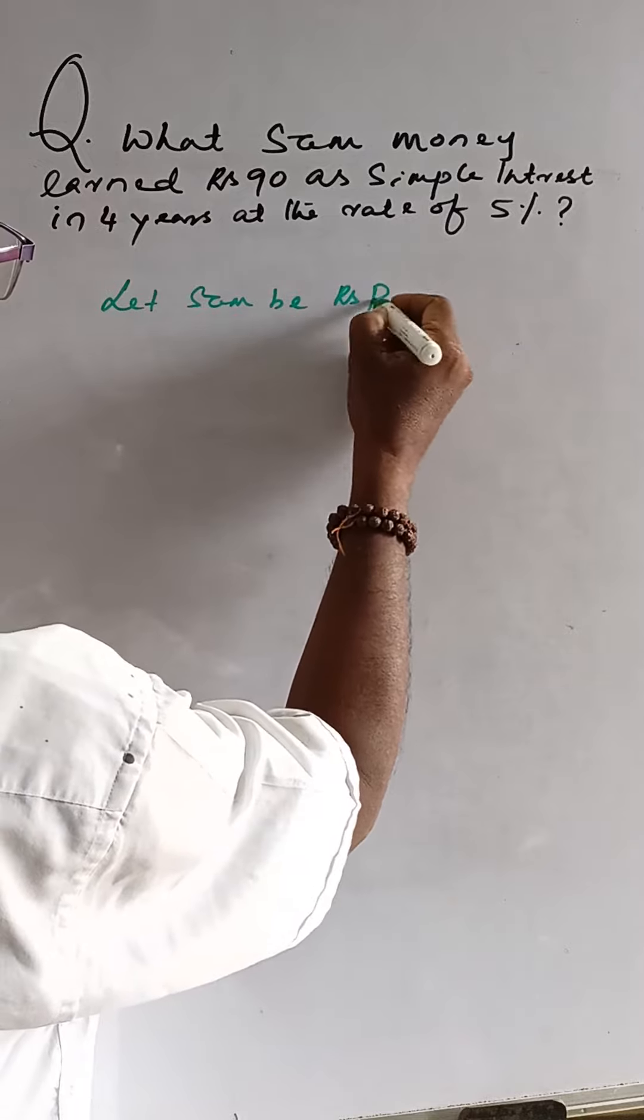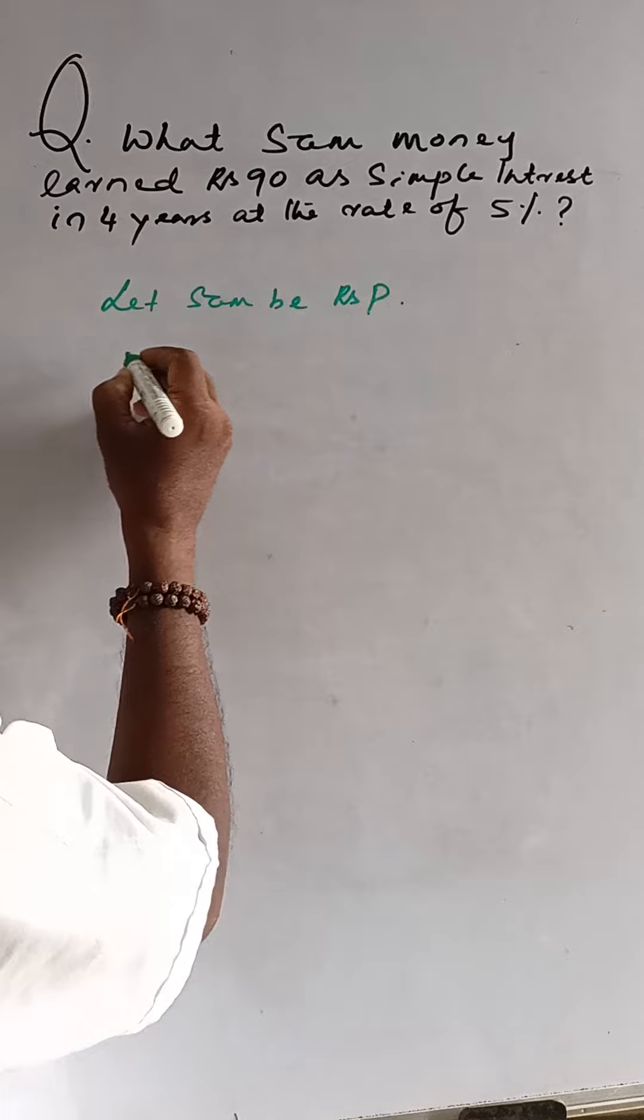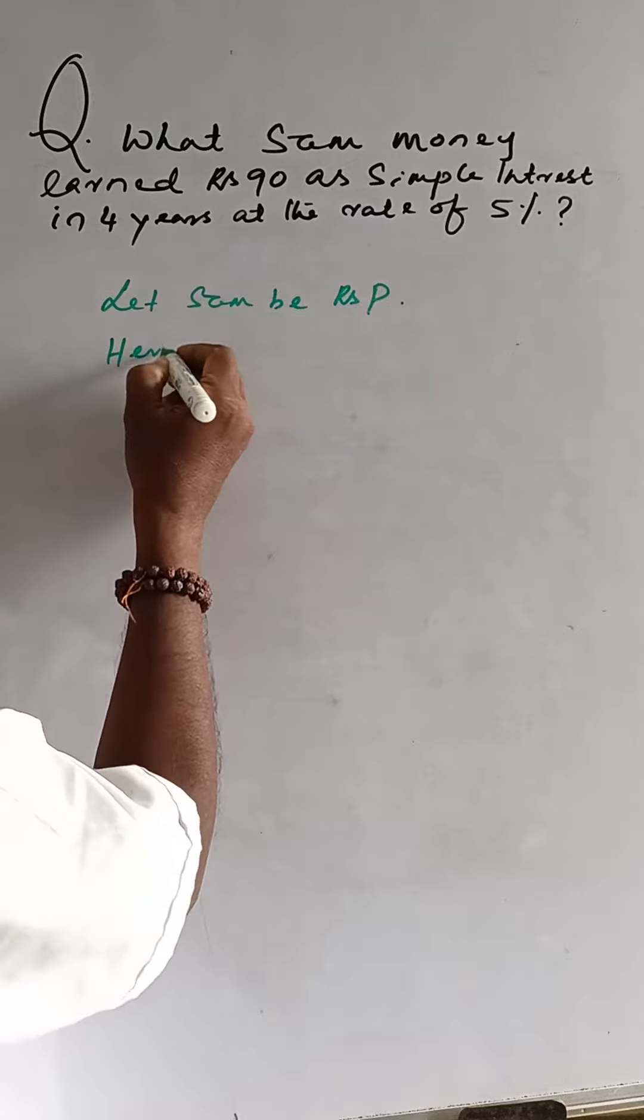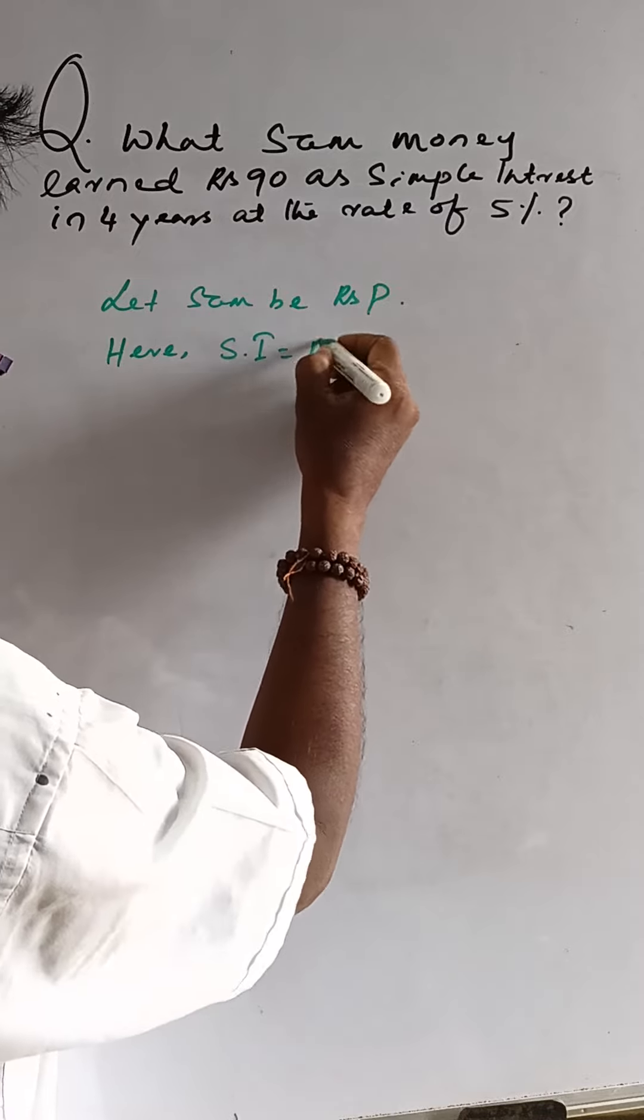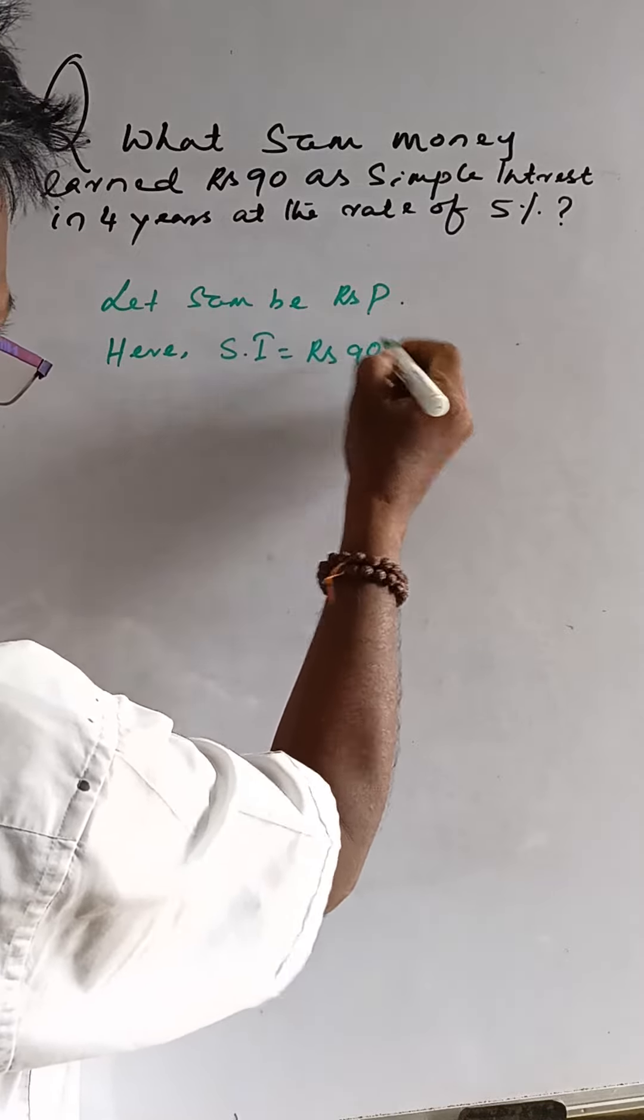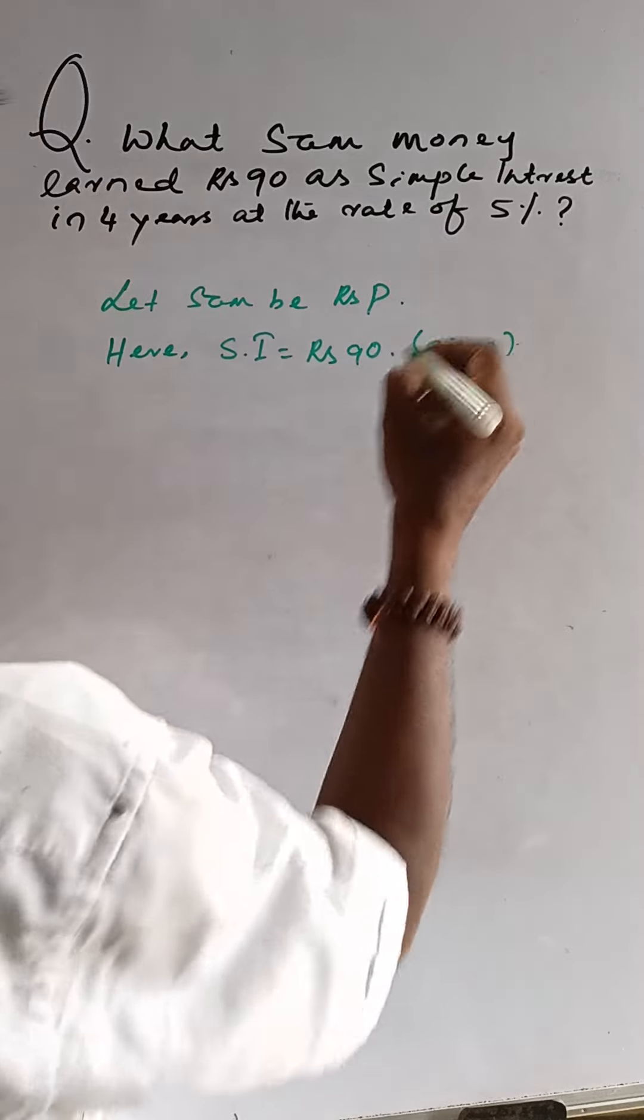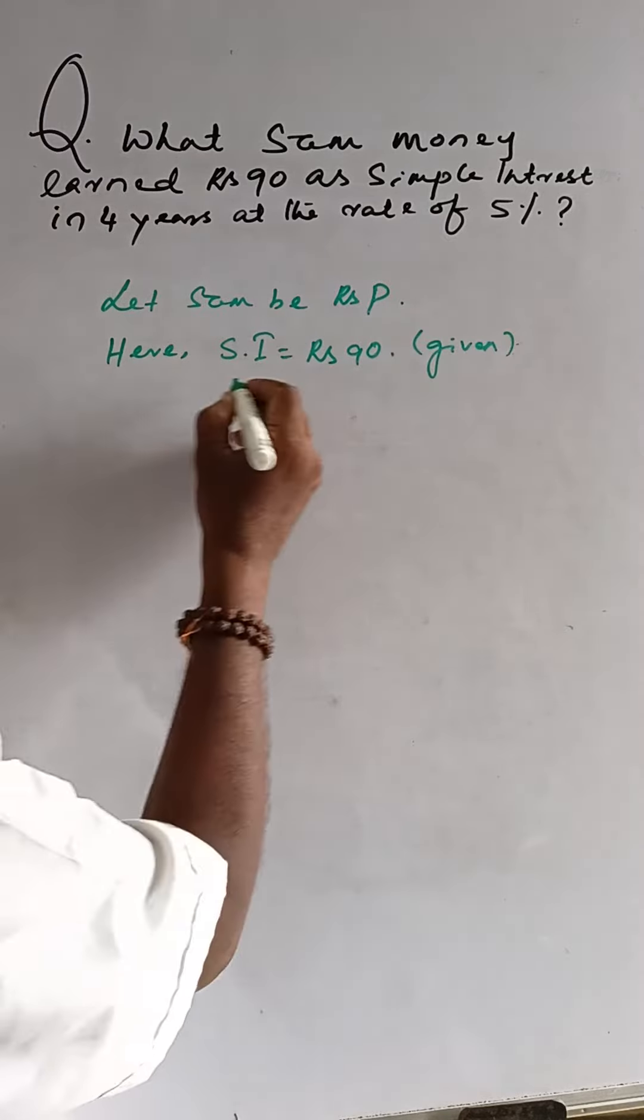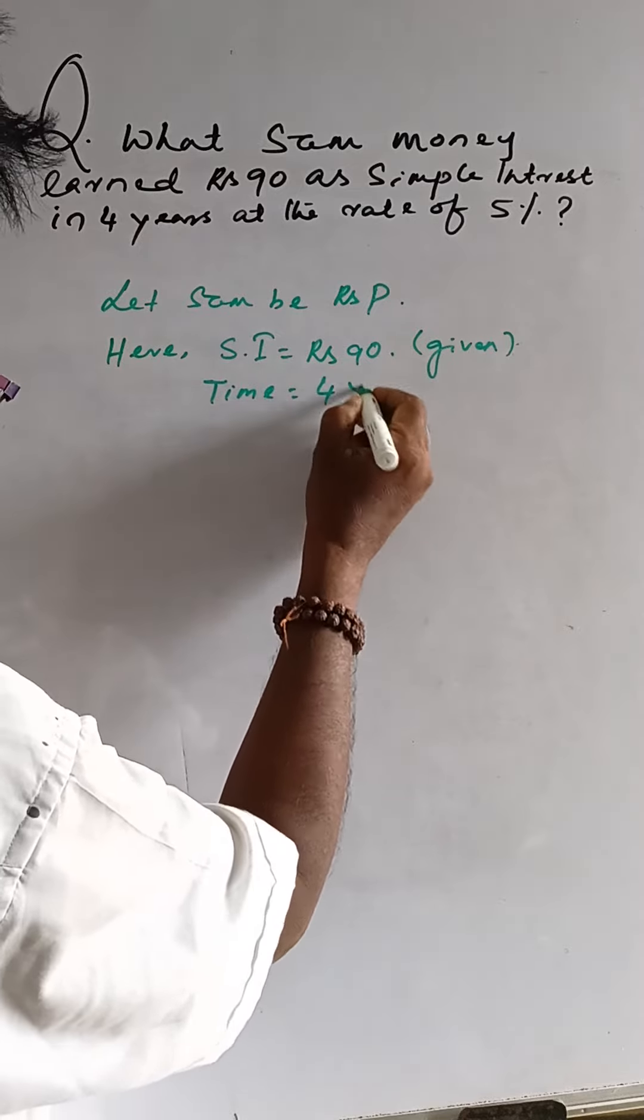rupees P. Here, simple interest is equal to rupees 90 given. Time: 4 years.